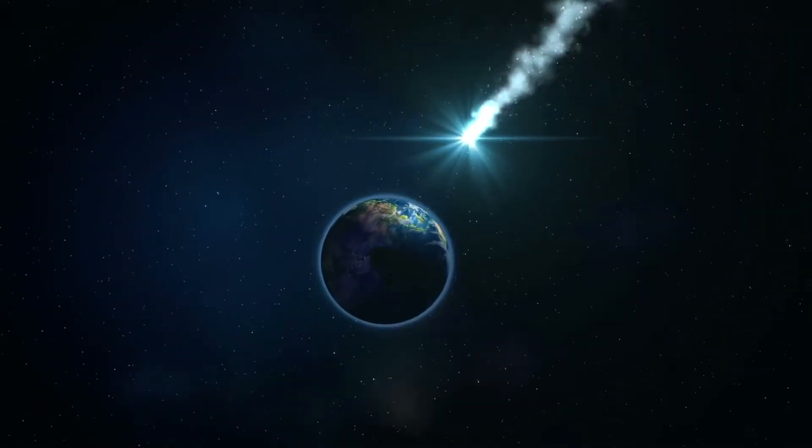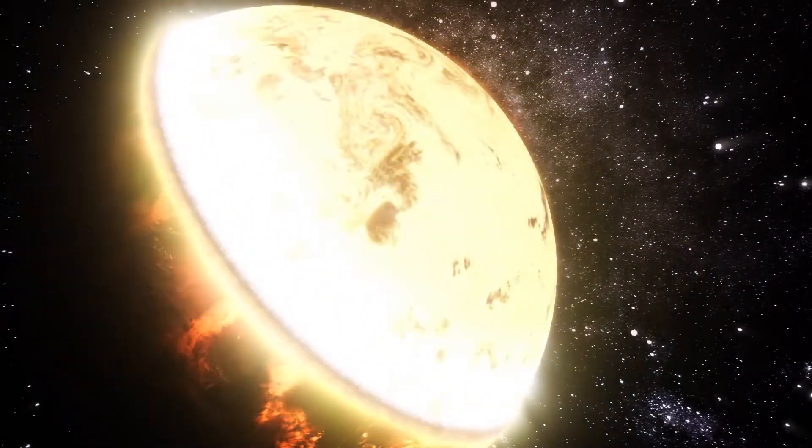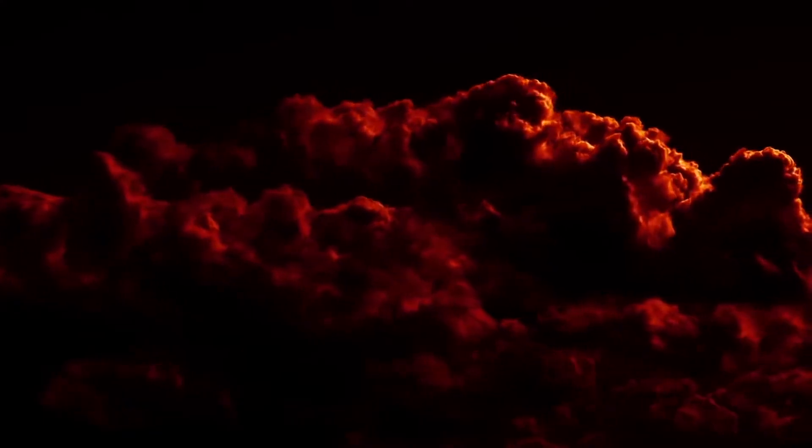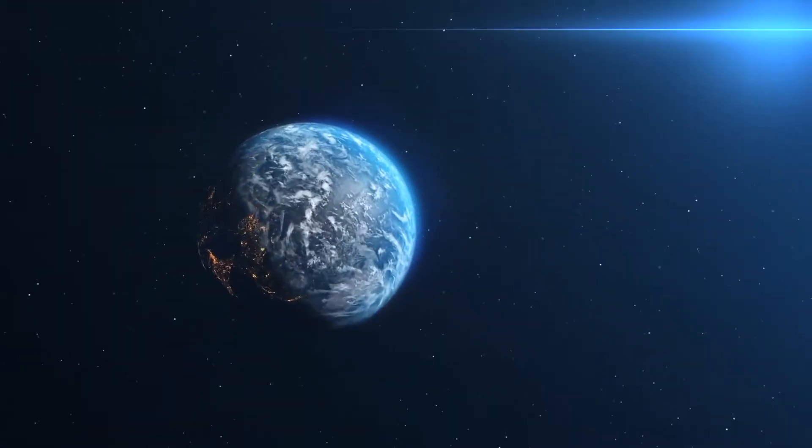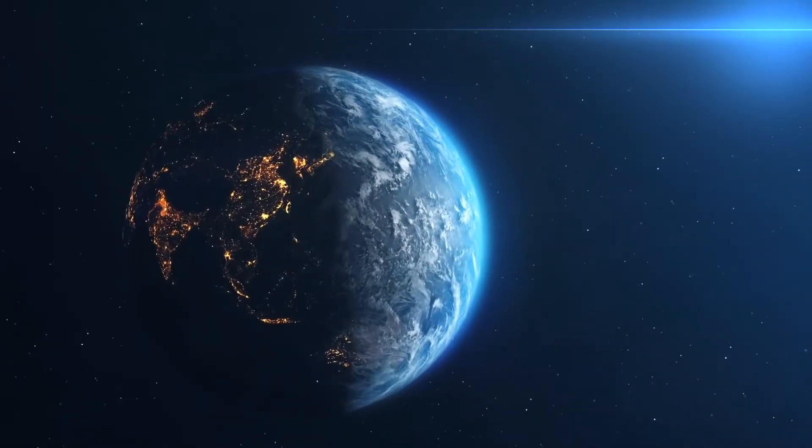An impact big enough could send enough dust and soot into our atmosphere that the sun could be blackened out for years. If Earth is struck with an asteroid impact, we can all expect life on this planet to change drastically in its aftermath.